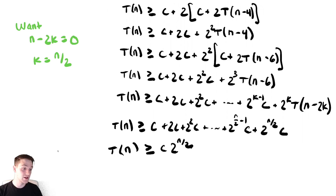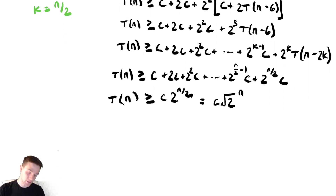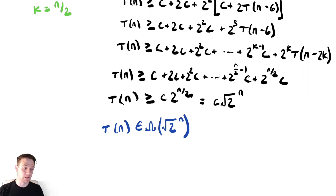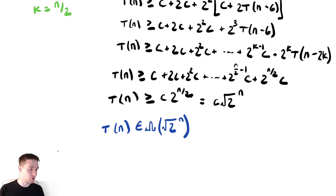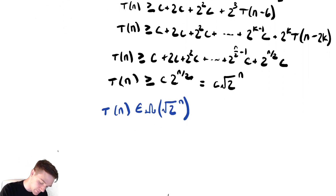I'm going to drop every single term except the last, so T of n is greater than or equal to C times 2 to the n over 2, which you can write as C times the square root of 2 to the n. Therefore, T of n is in big omega of the square root of 2 to the n. That means we are bounded below by an exponential function. Even for inputs of size 100, something like this can take longer than the universe has existed, so we know it grows at least as fast as an exponential function. This already means the algorithm is hopeless to use in practice.